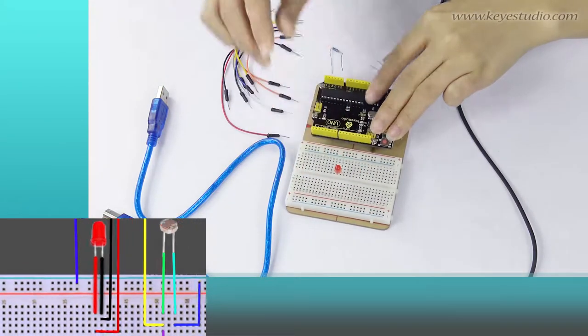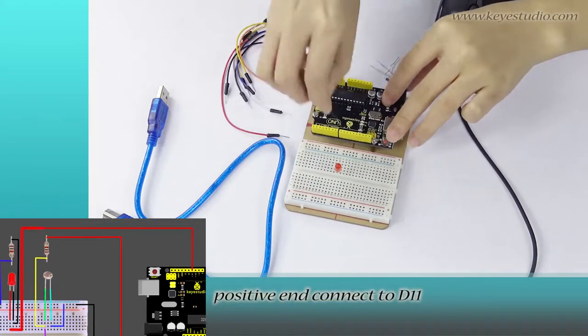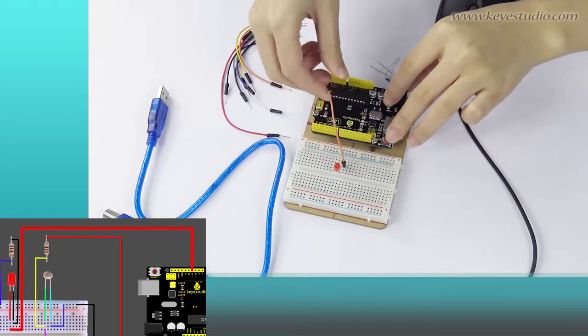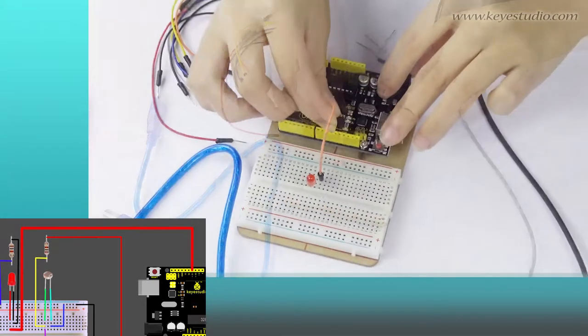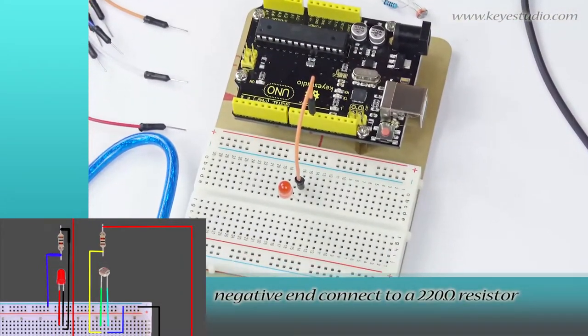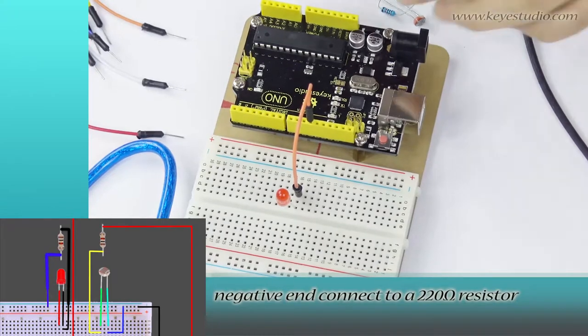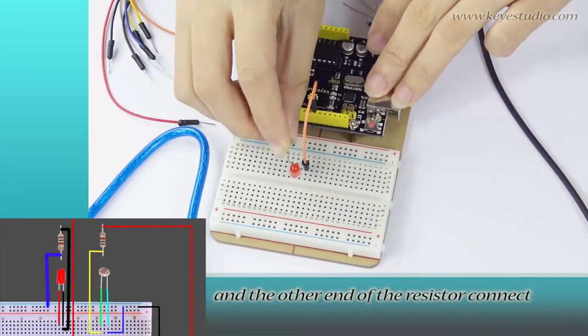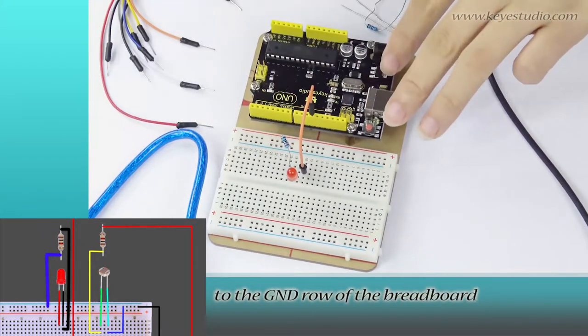Positive end connect to D11, negative end connect to a 220 ohm resistor, and the other end of the resistor connect to the ground row of the breadboard.